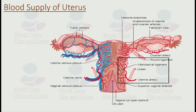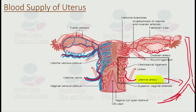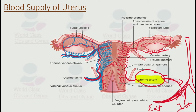The blood supply of the uterus is very important — we need to know which vessels supply blood to the uterus. The uterine artery is the main artery, and it arises from the anterior division of the internal iliac artery. From the aorta, we have the iliac artery in the abdomen, which divides into the internal iliac and external iliac. The uterine artery arises from the internal iliac. Importantly, it crosses above the ureter on its course to the uterus — this is called the 'bridge over water,' where the ureter runs from the kidney to the urinary bladder.